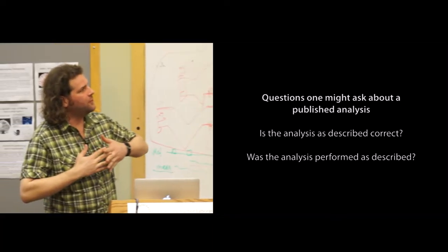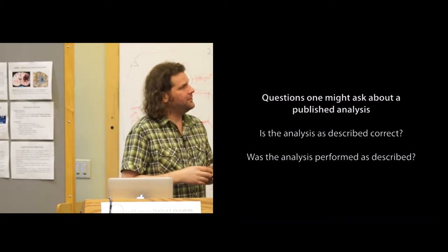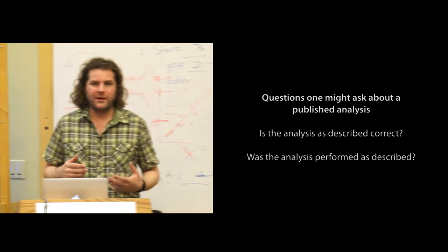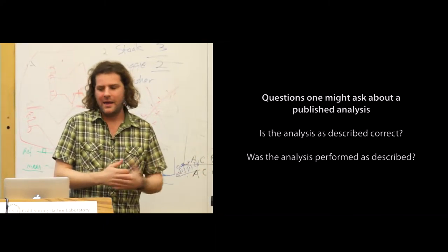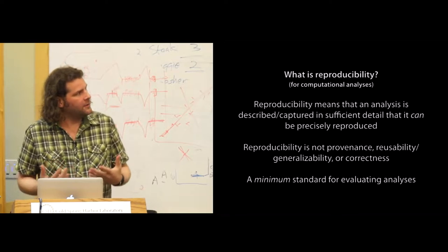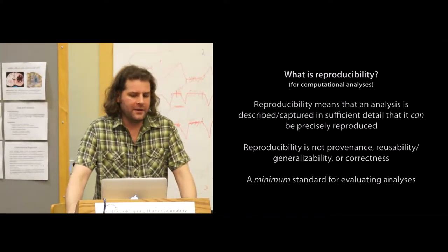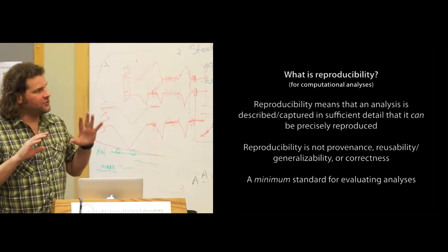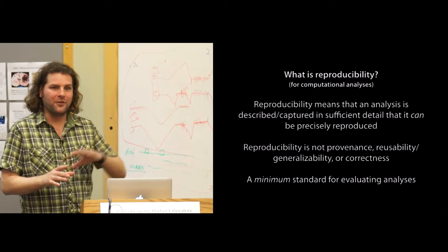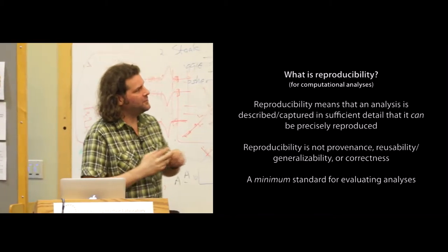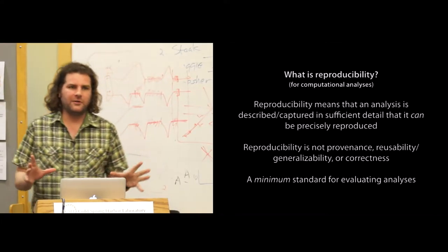You can look at a published analysis and ask a couple of different questions. First: is the analysis described correctly? Second — a very different question — was the analysis performed as described? Correctness you can evaluate from the paper, but knowing whether what was done is actually what's written is completely different, and often difficult to verify. What we'd like is to achieve computational reproducibility, meaning the analysis has been captured in sufficient detail that it can be precisely reproduced. Just because something is reproducible doesn't mean it's correct — there are other qualities we'd like — but it's very hard to evaluate those criteria if you can't even reproduce the analysis. We can think of this as a minimum standard for published analysis.